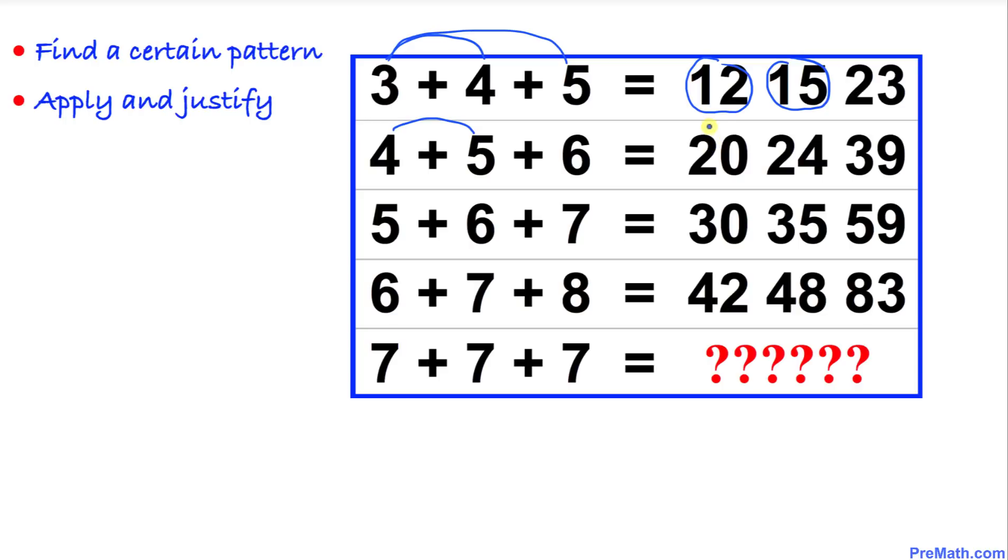And 4 times 6 is 24. Likewise, once again, 5 times 6 is 30 and 5 times 7 is 35. So far, so good. Next one is going to be 6 times 7 is 42.